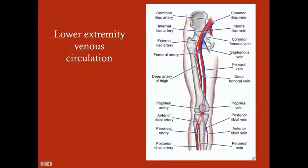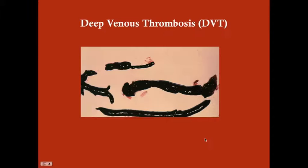Primarily DVTs occur in the lower extremity — about 90% or more. The common iliac vein splits into the external and internal iliacs, turns into the femoral vein once it crosses the inguinal ligament, and continues on to the lower extremity. The thrombosis itself is not a tiny pebble — it's actually a long cord of thrombosis. These are quite long, and what you see is essentially what a thrombus pulled straight out of a vein looks like.